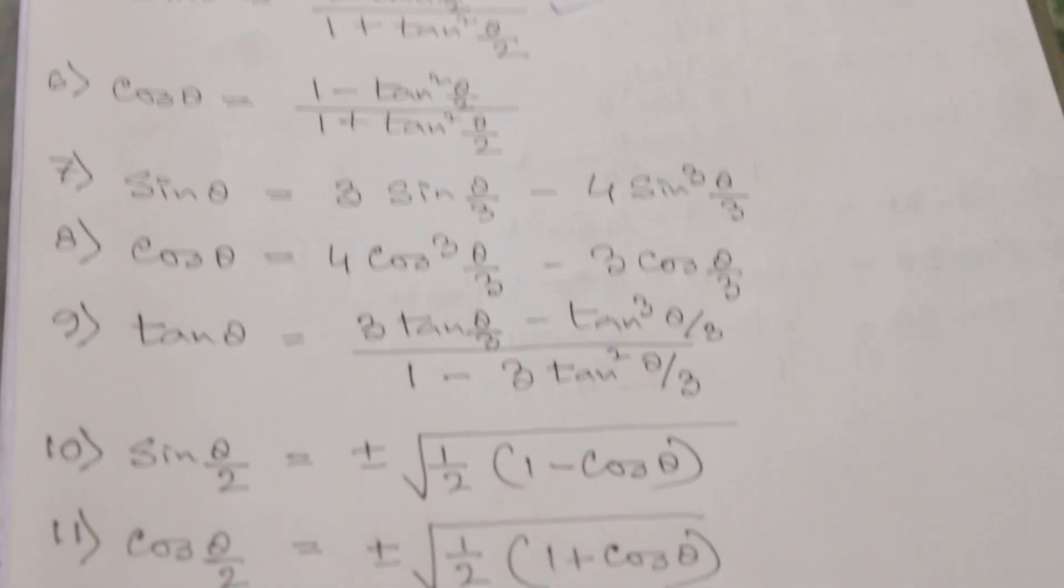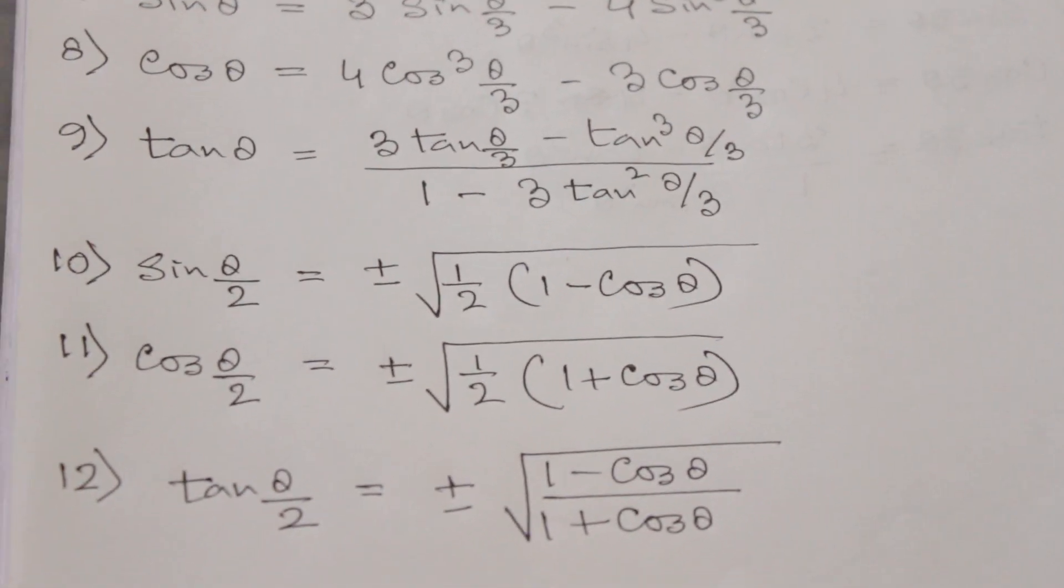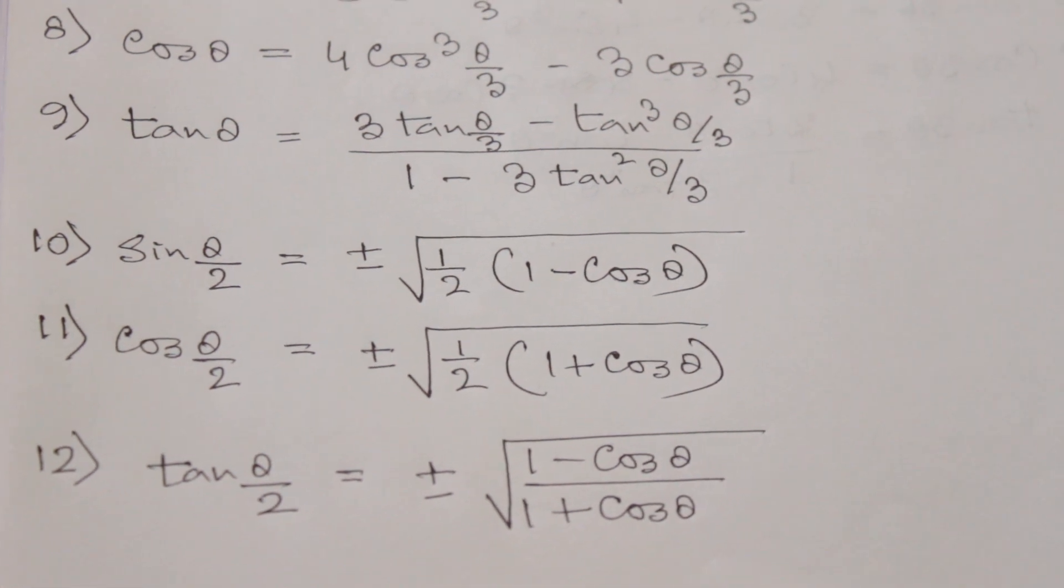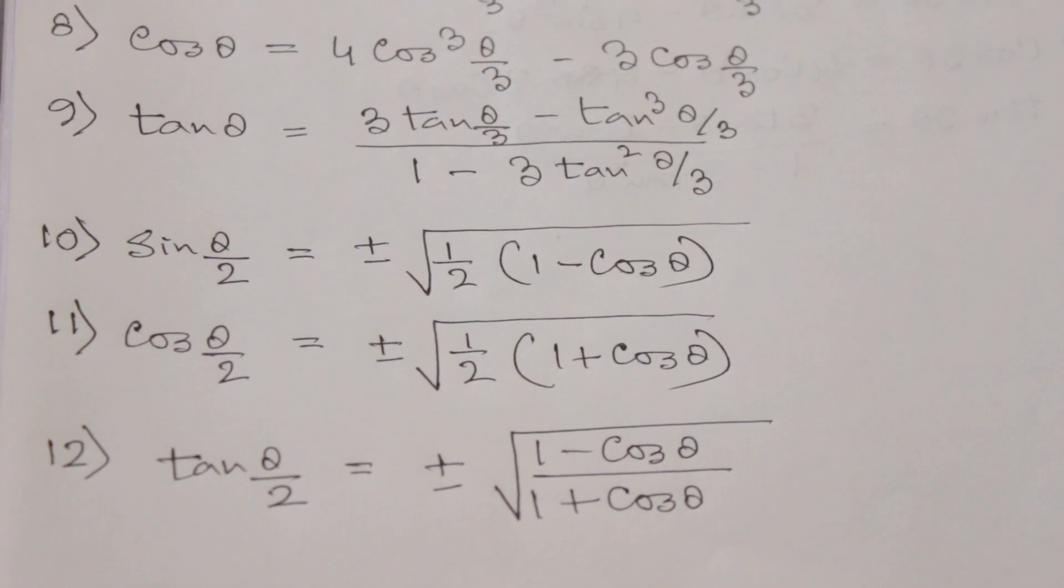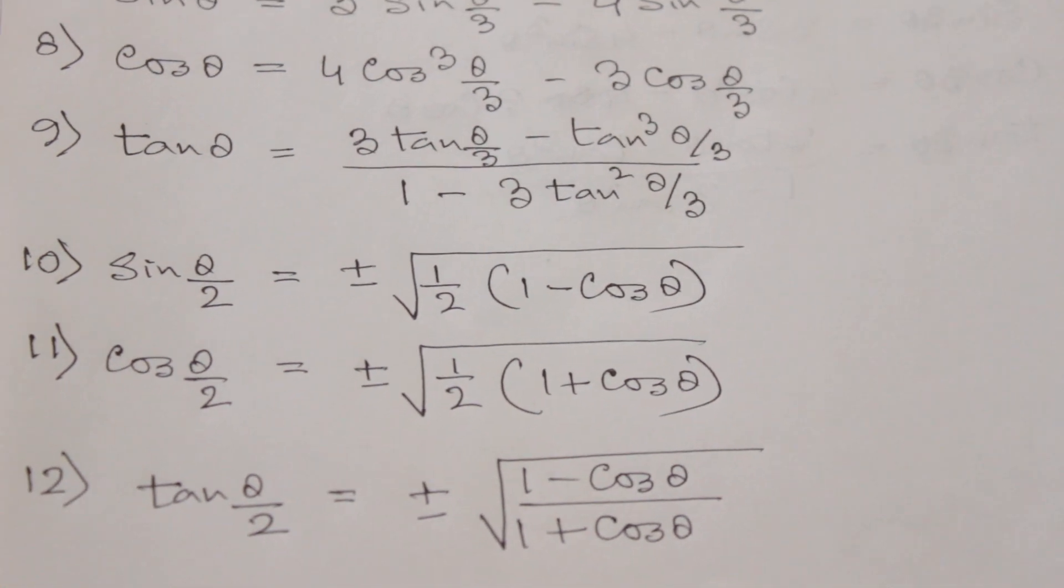Cos θ/2 is equal to ±√(1/2(1 + cos θ)) and tan θ/2 is equal to ±√((1 - cos θ)/(1 + cos θ)).